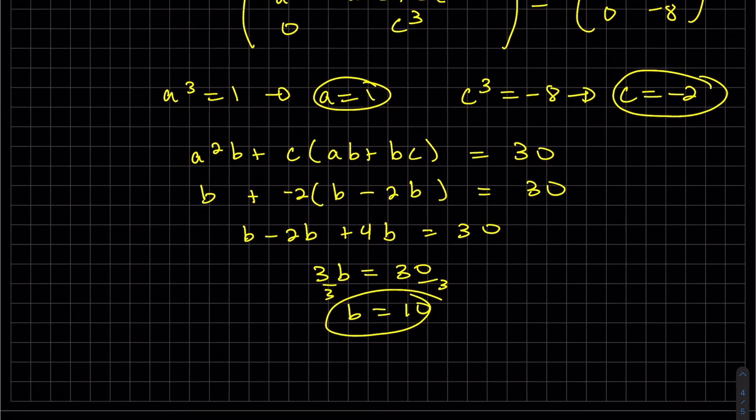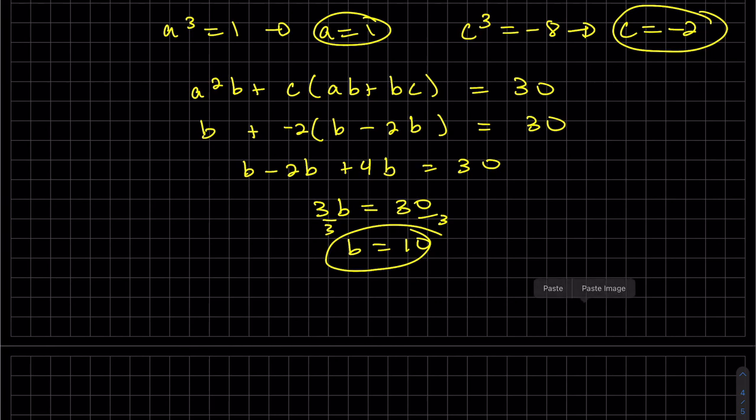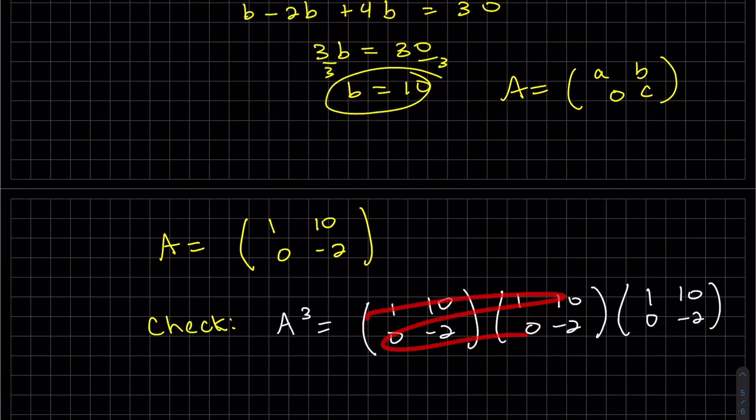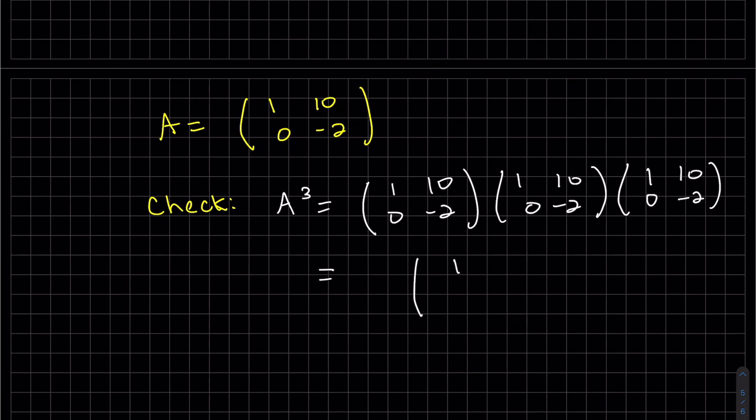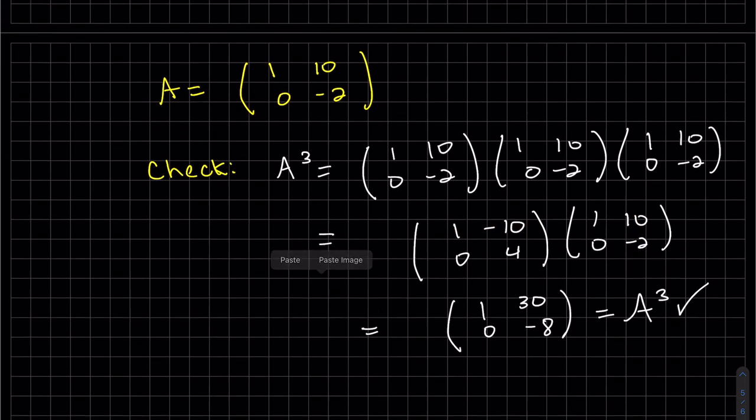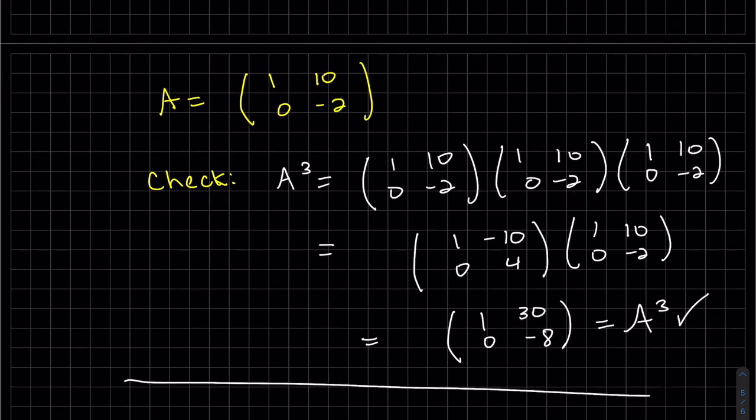Yep, so B is 10. So therefore, number A, and let's check. Multiply the first two. 10 minus 20. 10 plus 20. That's what we were given. Okay, that's it for today. Have a good day.